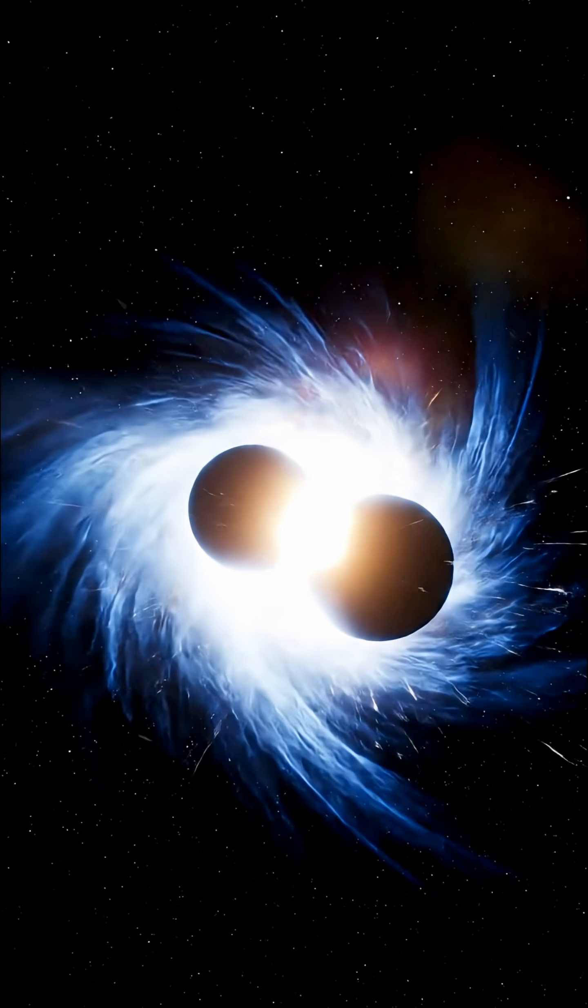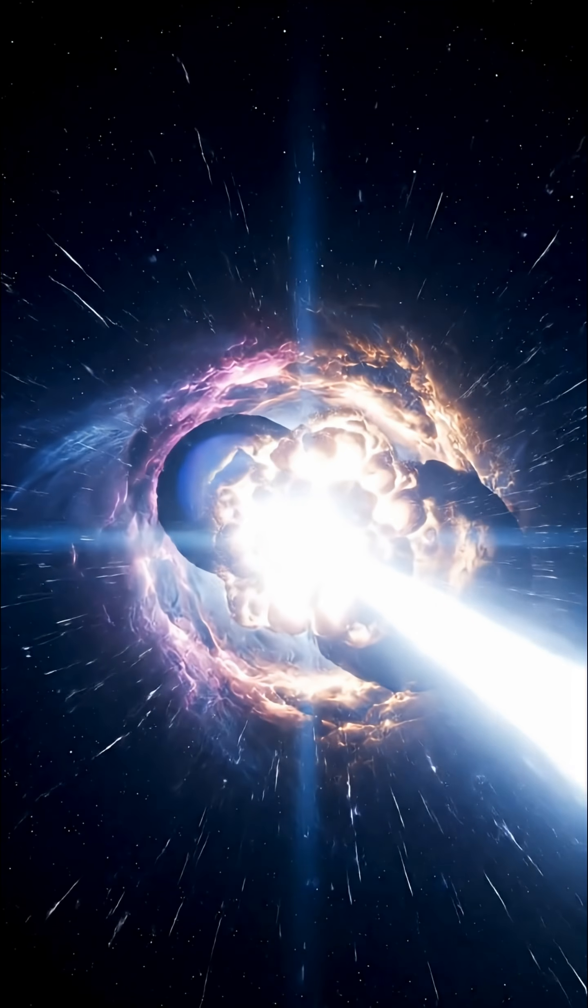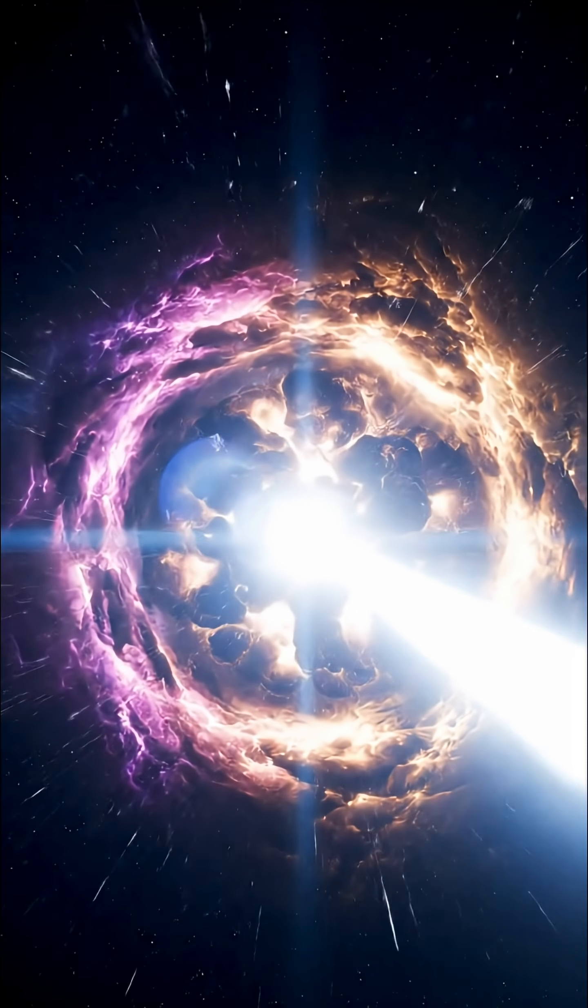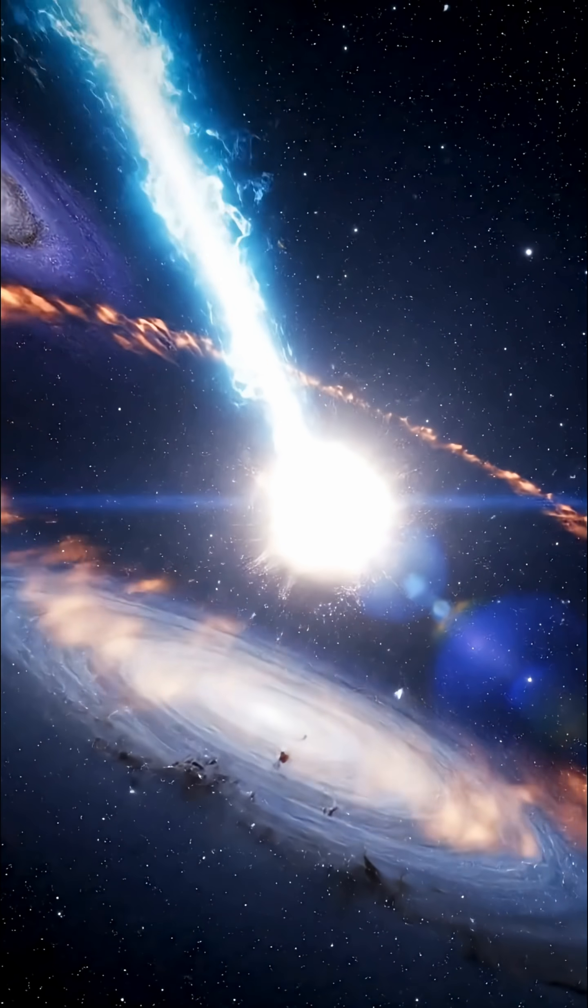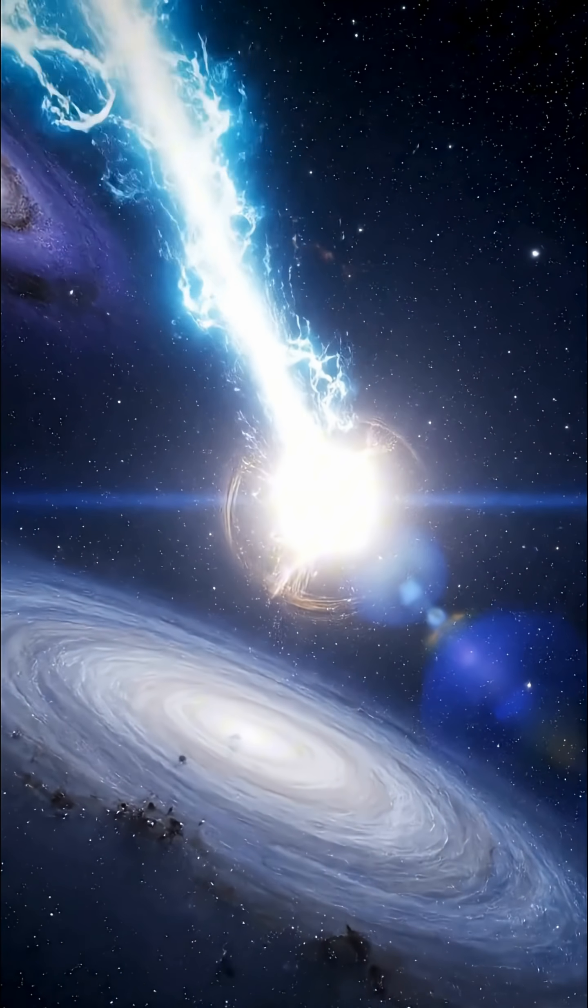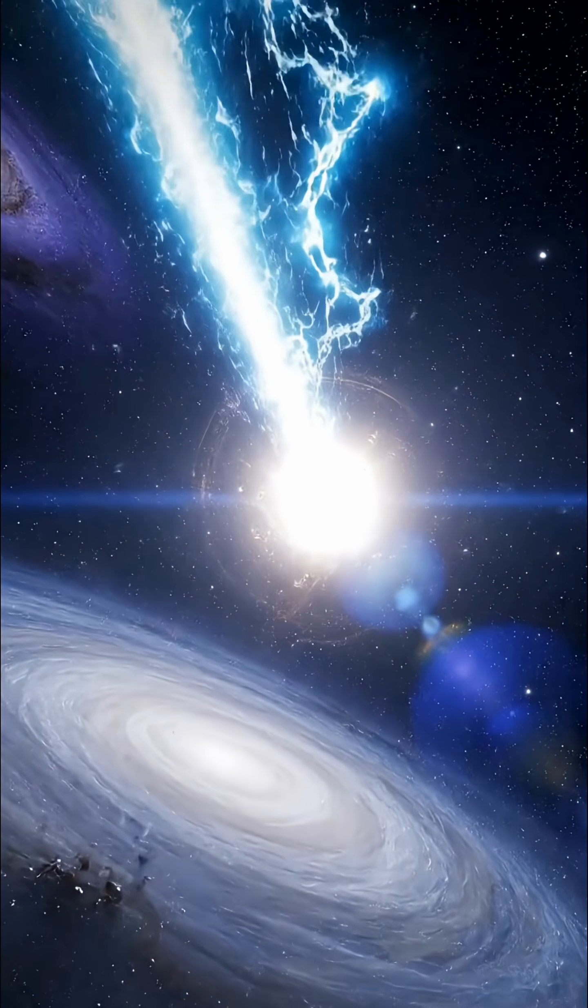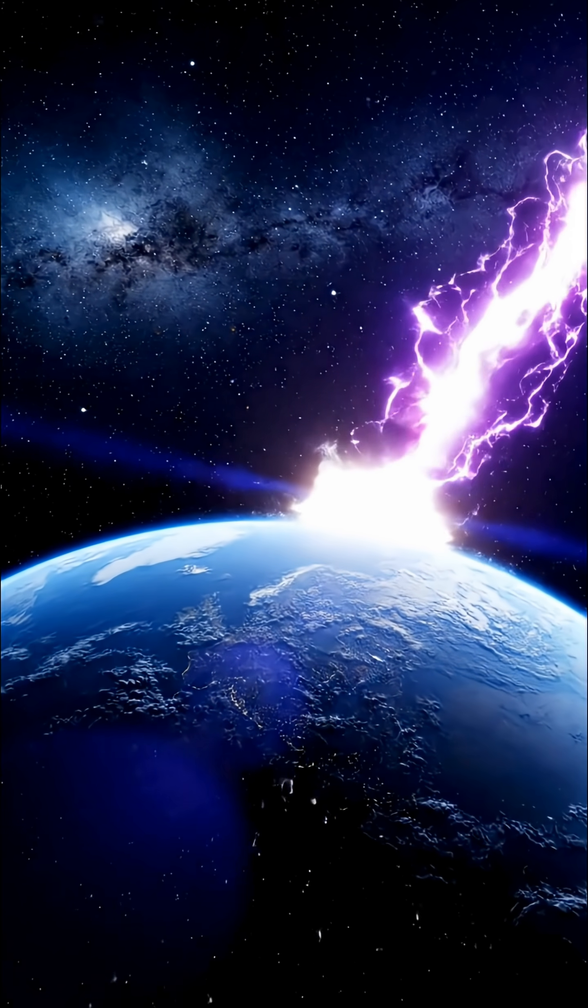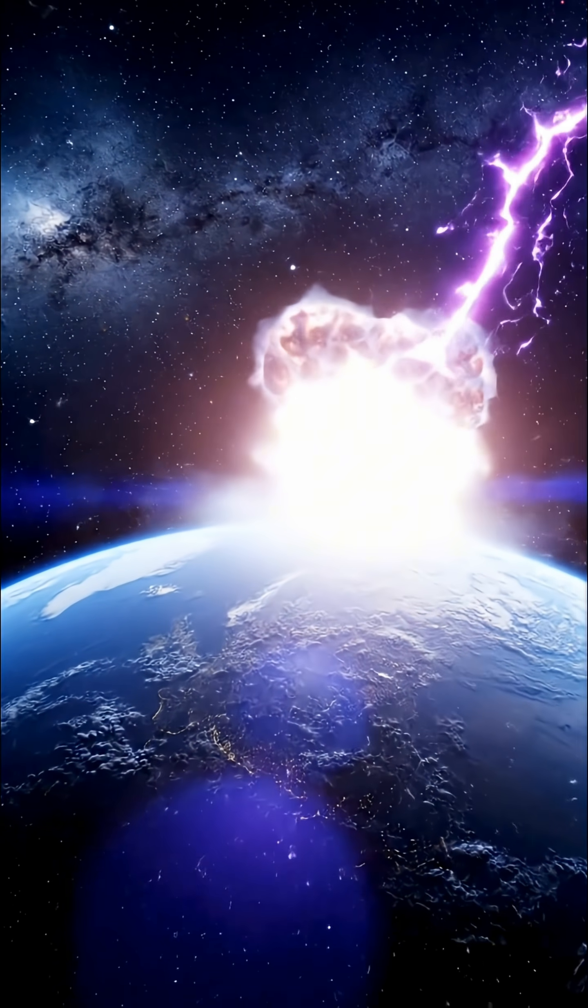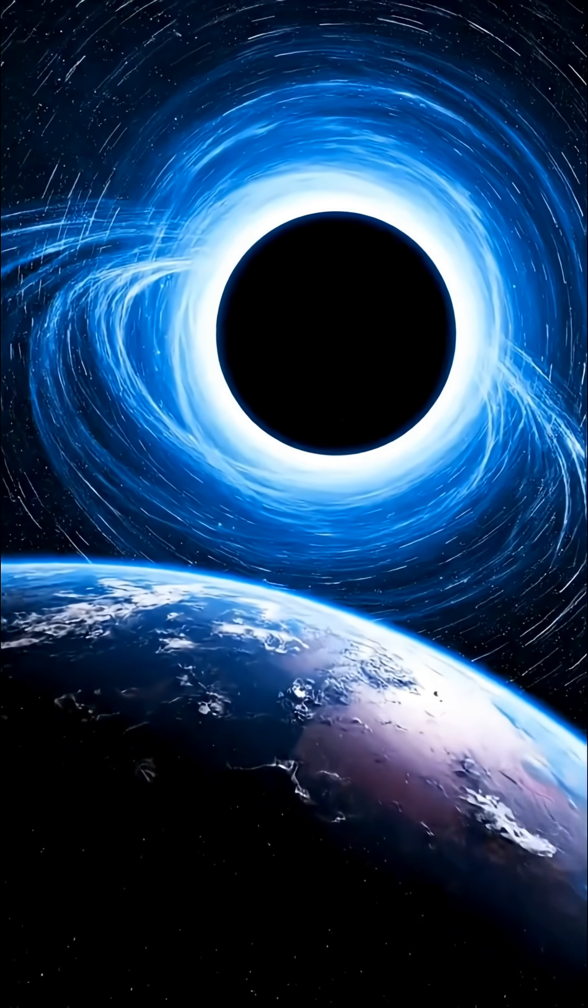Number 3: A neutron star collision. Neutron stars are the densest objects in the universe aside from black holes. When two of them collide, they unleash enormous amounts of energy, including intense gamma radiation and powerful gravitational waves. If such a collision happened close enough, Earth could be bathed in deadly radiation within seconds, long before any warning reached us.